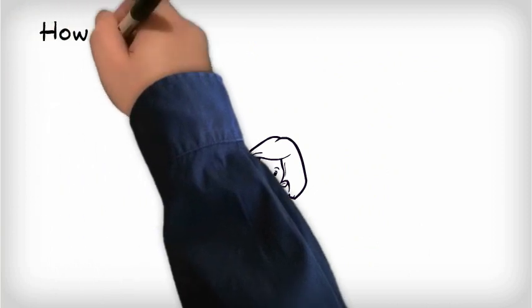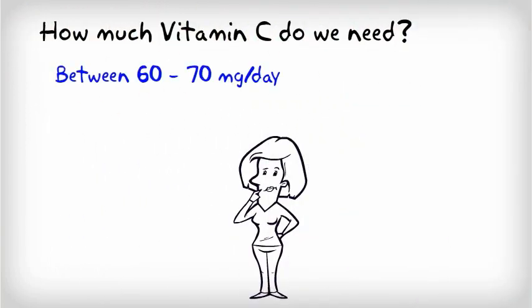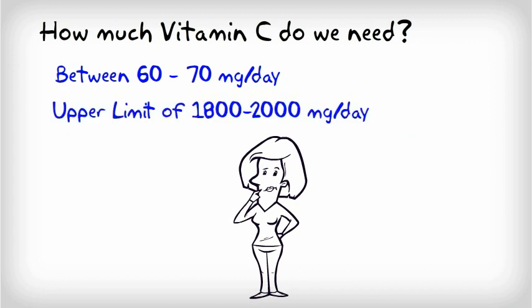So how much vitamin C do we need then? Between 60 and 70 mg a day, with an upper limit of between 1800 and 2000 mg a day.